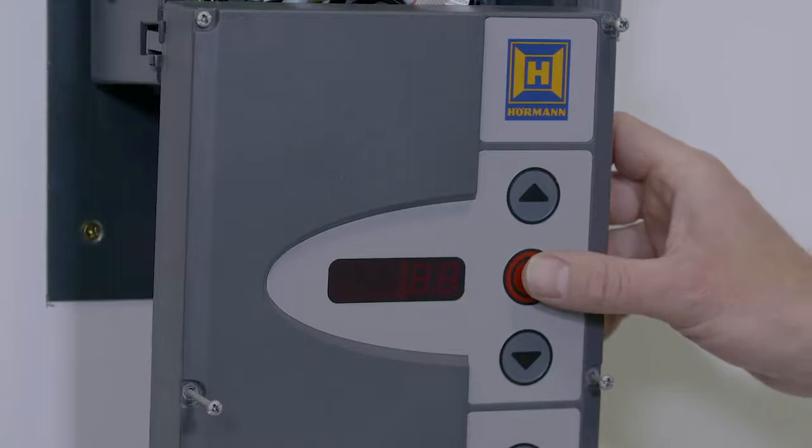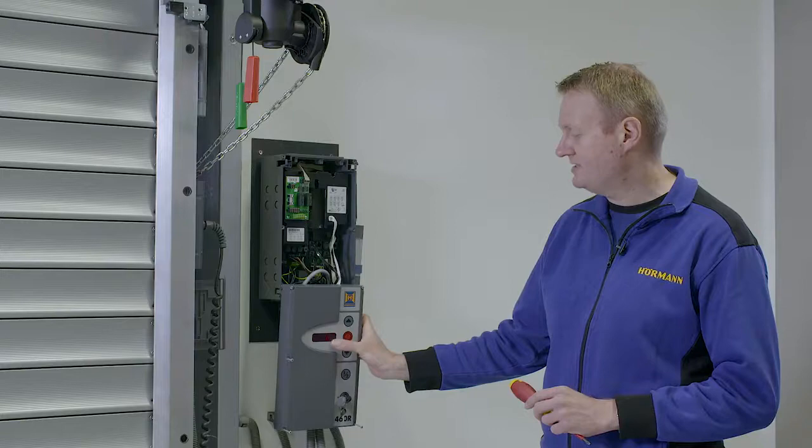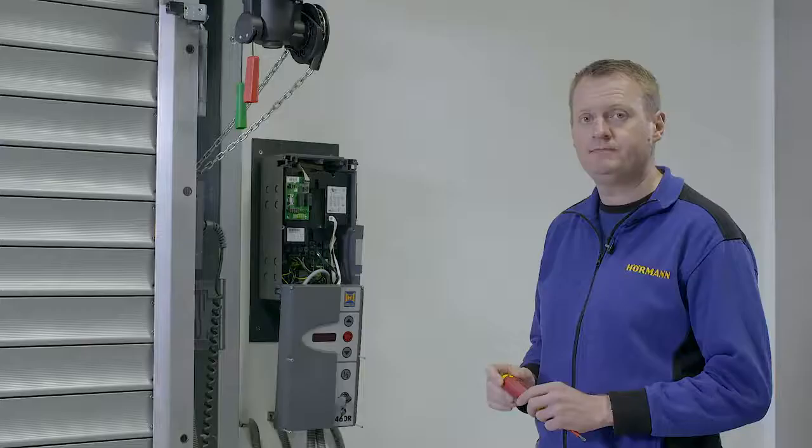Next we set the motor orientation. Two equal signs and the display will then ask you to set the top limit. Briefly press the open button to make sure the door runs in the right direction.